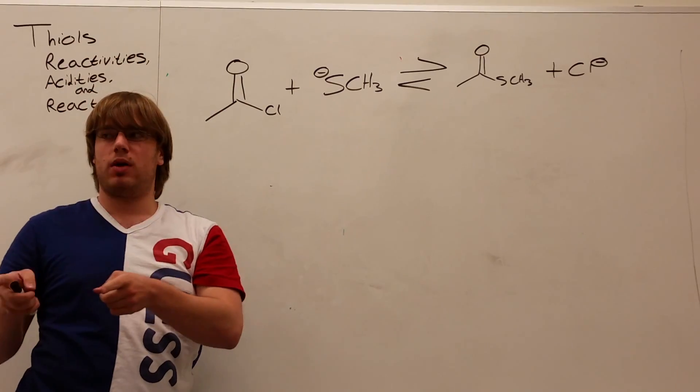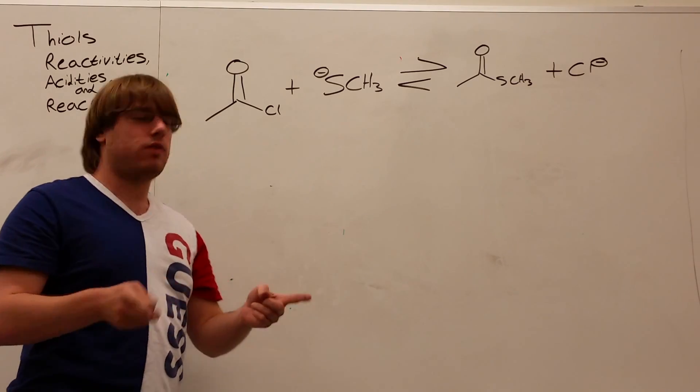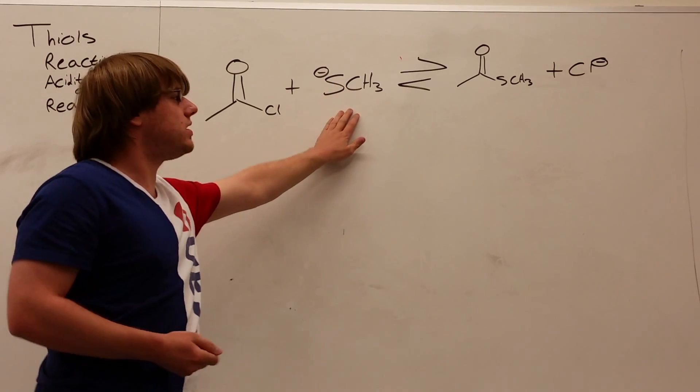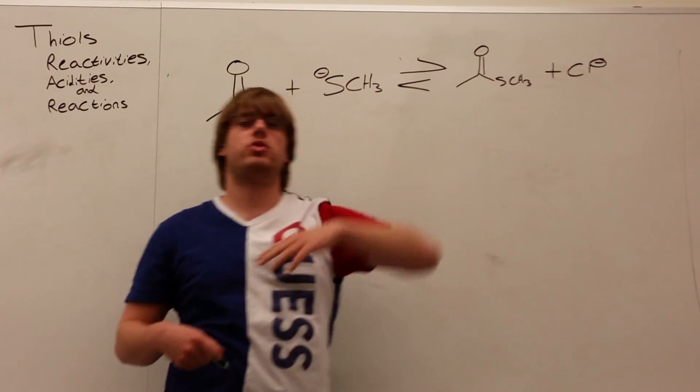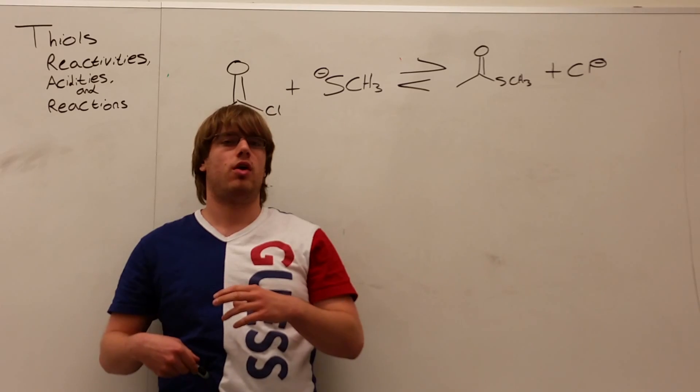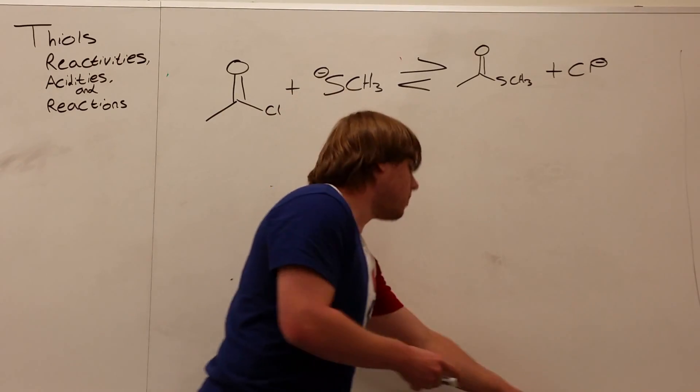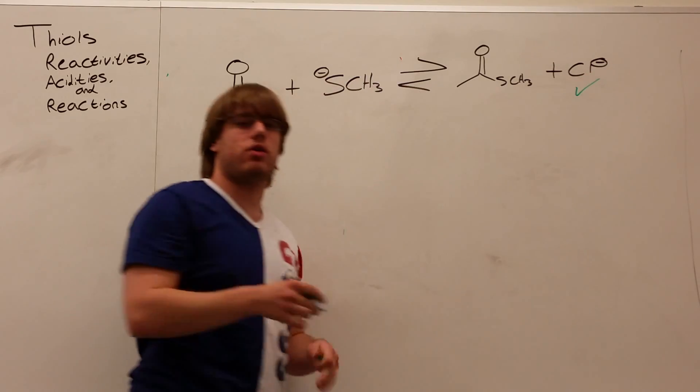So, let's approach it from two different points of view. Let's look at the leaving group, and then we'll compare the carboxylic acid derivatives. So, here we have an SCH3 minus, and we're comparing it to a Cl minus. Which did we say was more stable in that chart of ours? Cl minus was the more stable leaving group. So, right now, we know that right here, this is the more stable leaving group.